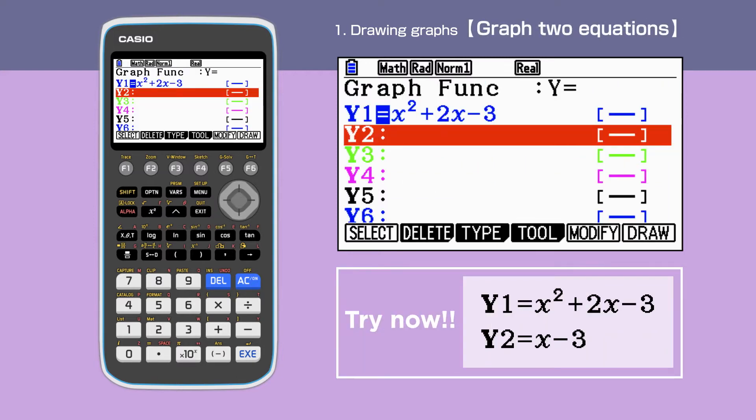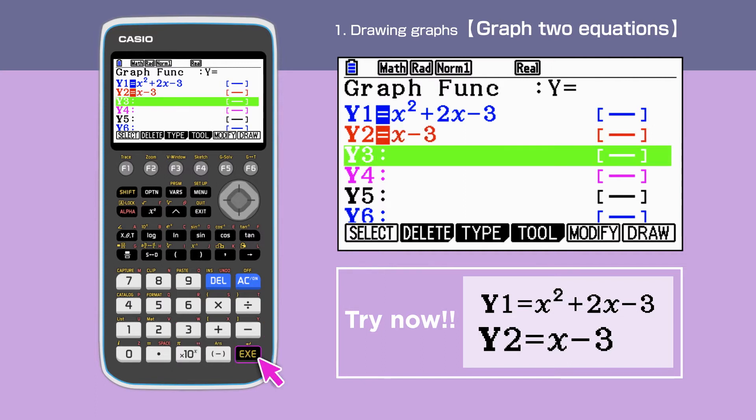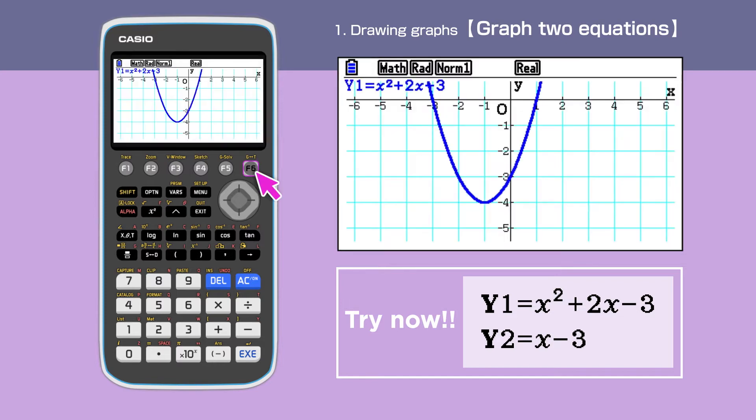This time, we enter x minus 3 in y2. Now, we have two equations highlighted, meaning that the calculator is going to draw two graphs. Enter F6 to draw the graphs. We have a parabola and a straight-line graph on the same screen.